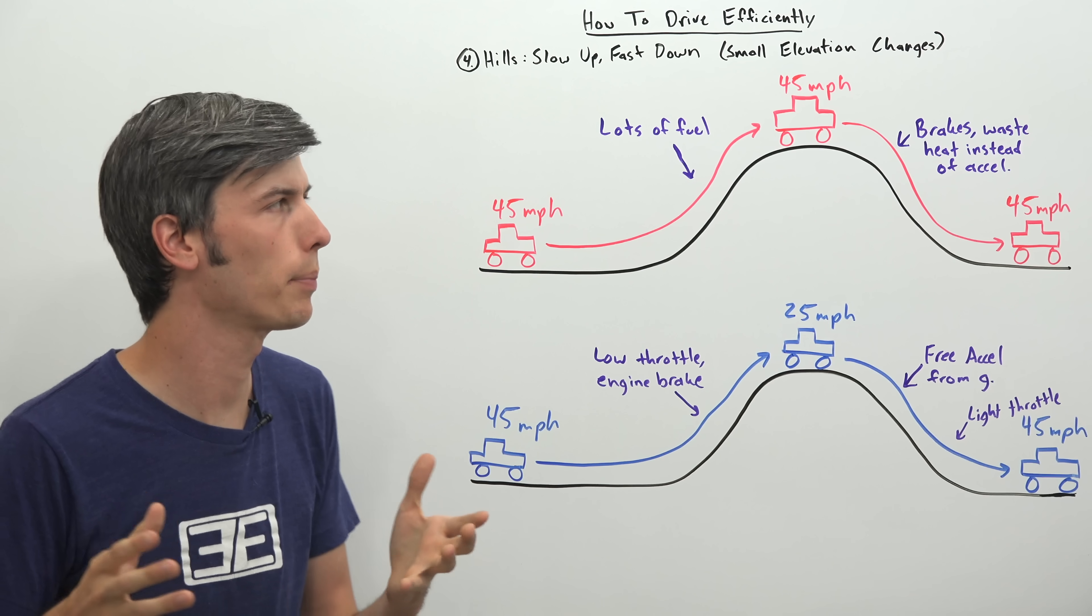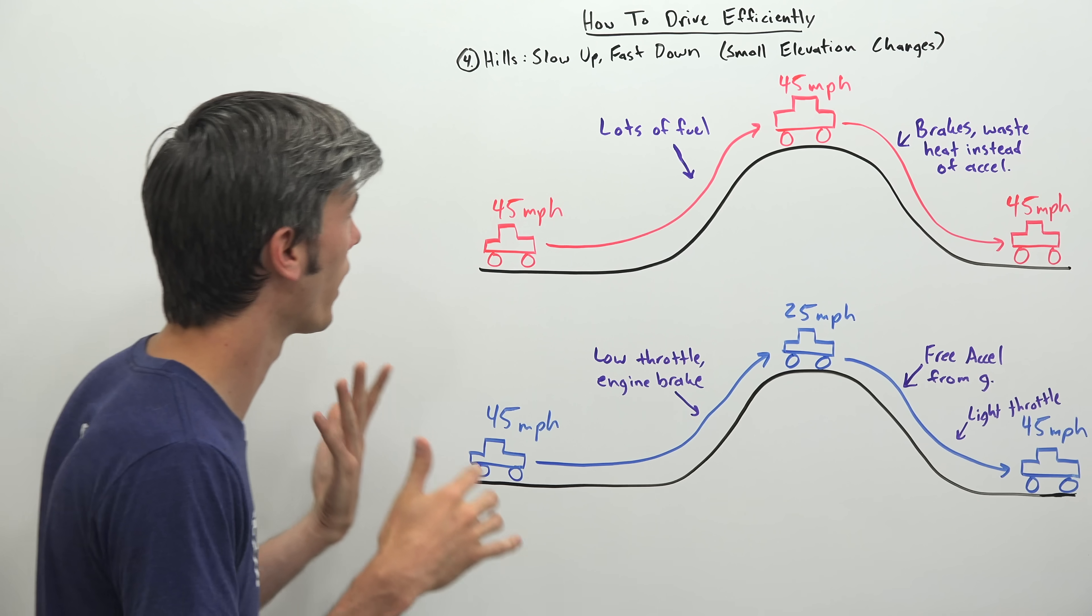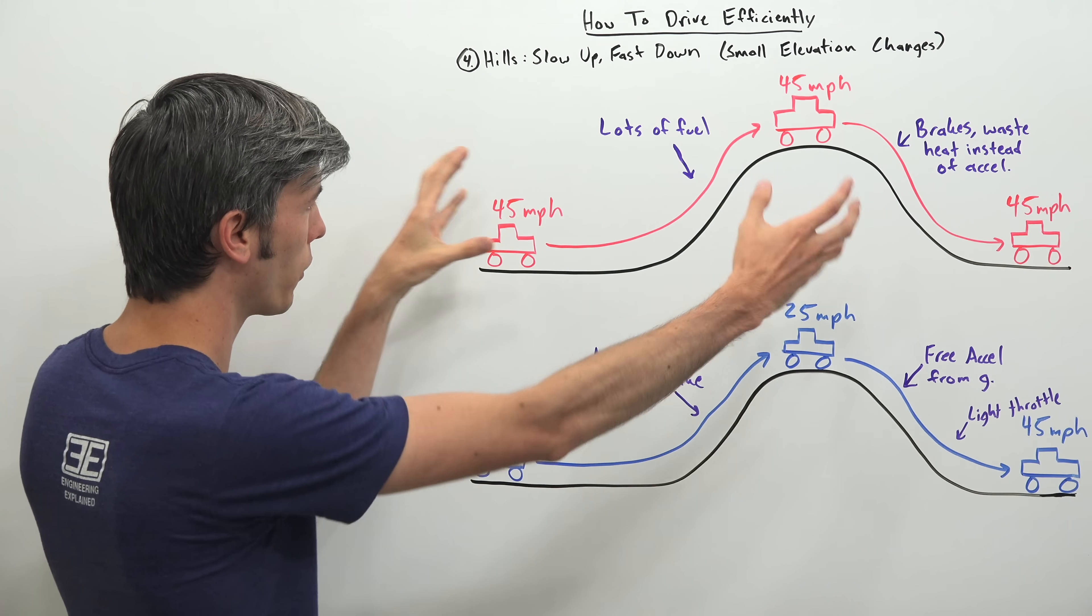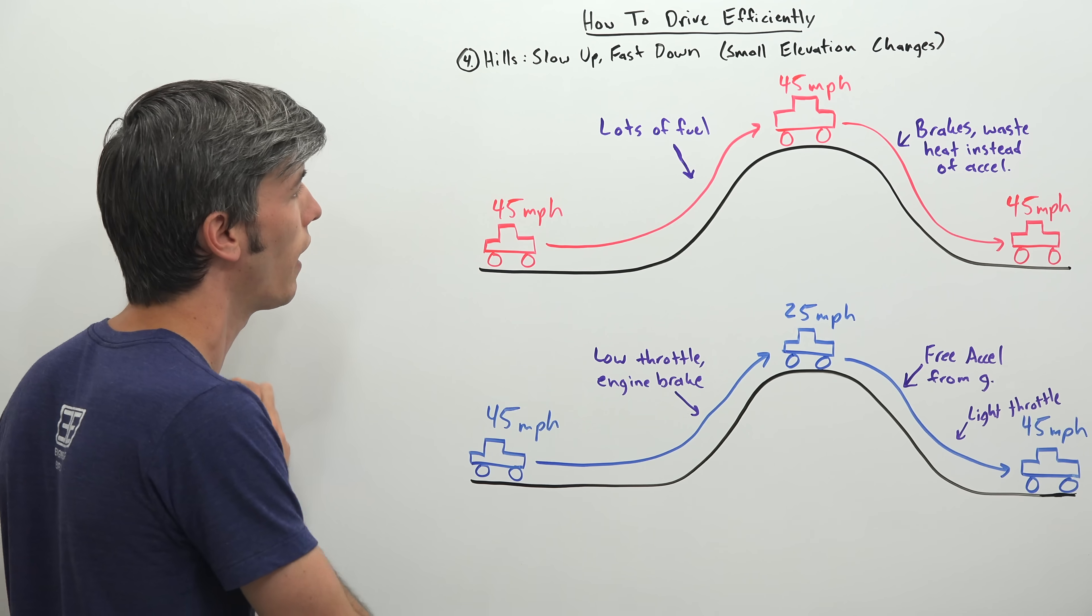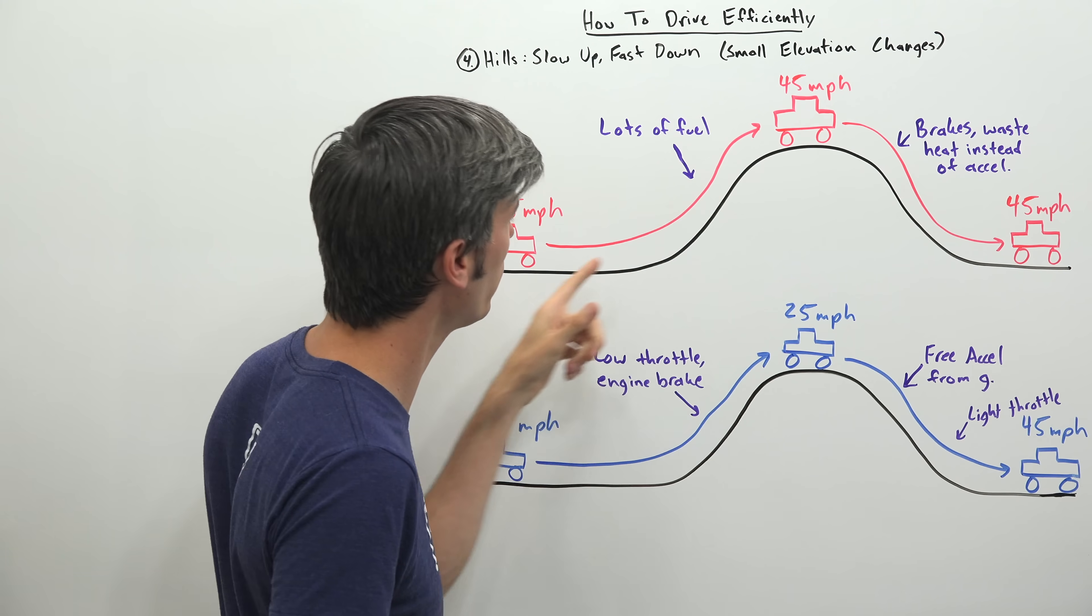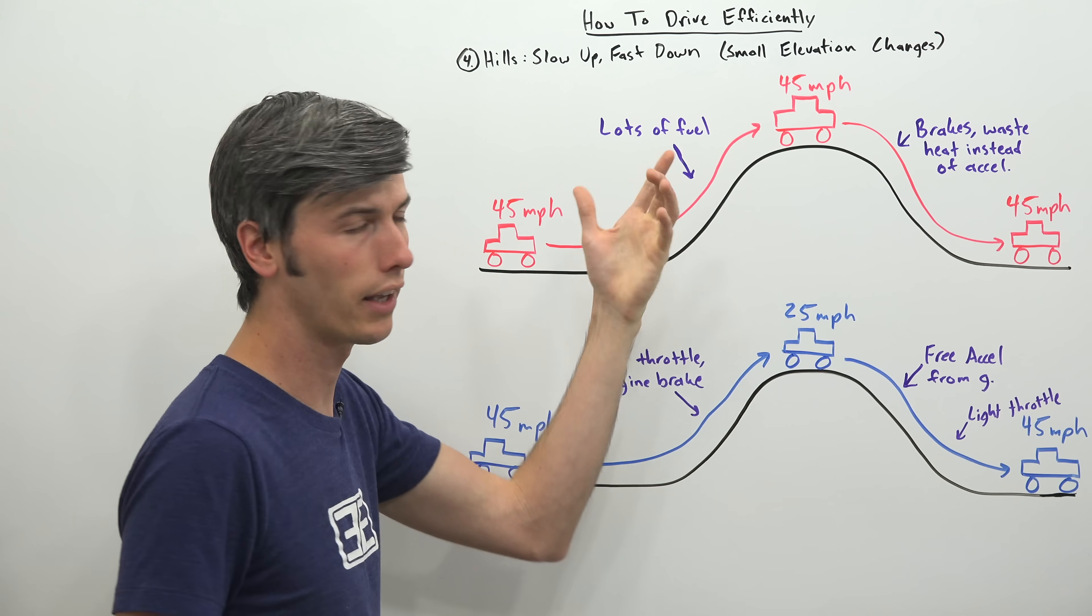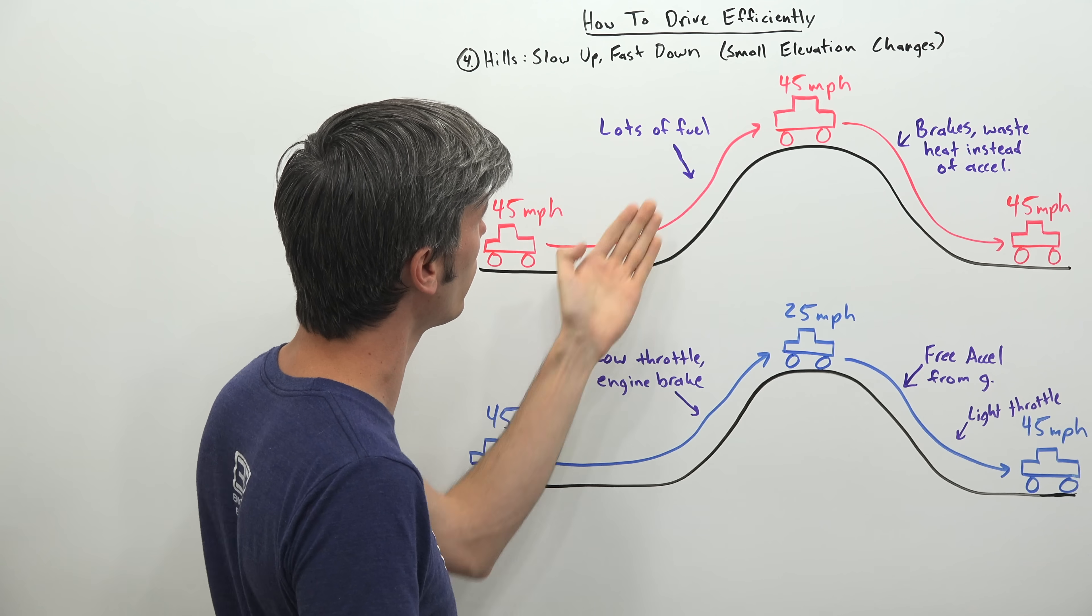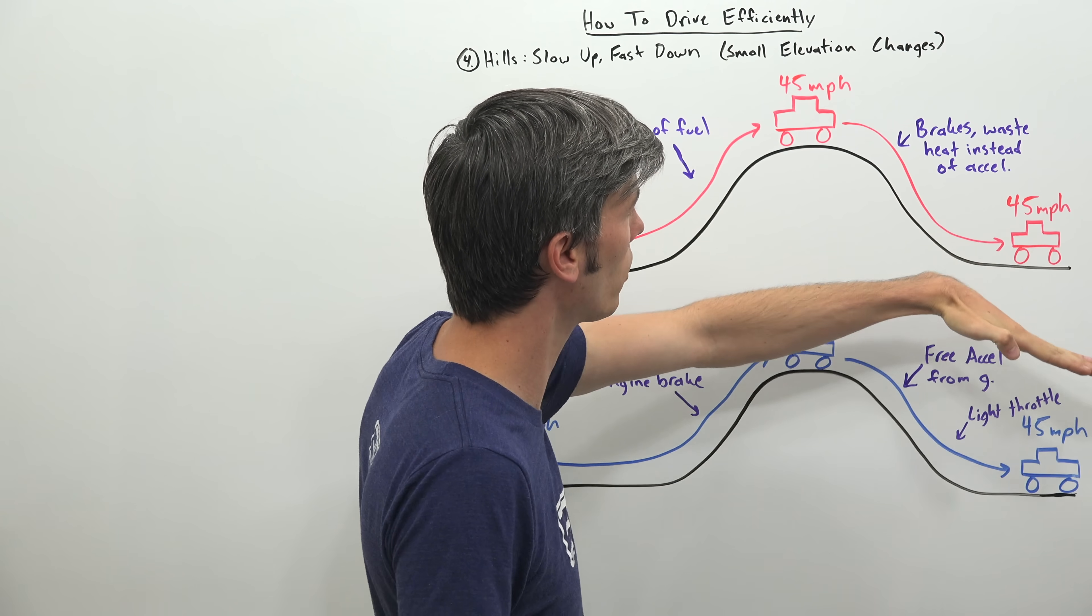Now, speaking of hills. Our fourth tip is how to efficiently drive over small elevation changes. And the rule is very simple. Slow up. Fast down. So in our first scenario, not doing the ideal thing. So we're driving along at 45 miles per hour. We come up to a hill. We maintain that 45 miles per hour up the entire hill. And doing so, of course, requires a lot of fuel. Because you have to fight against gravity to go up the hill. You're at that 45 miles per hour. Then you come back down.